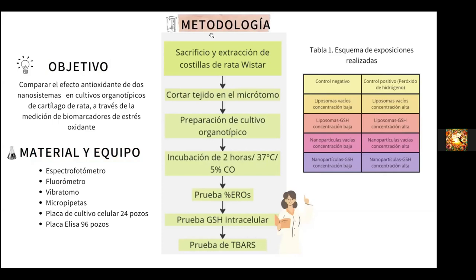Además, se llevó a cabo la siguiente metodología. Se realizaron sacrificios con el fin de extraer costillas de ratas de Wistar. Se cortaron en un vibratomo y se prepararon los cultivos incubándolos por un tiempo de dos horas para el caso de los nanosistemas y 30 minutos para el control positivo, a 37 grados centígrados y 5% de CO₂. Después se realizaron las pruebas.